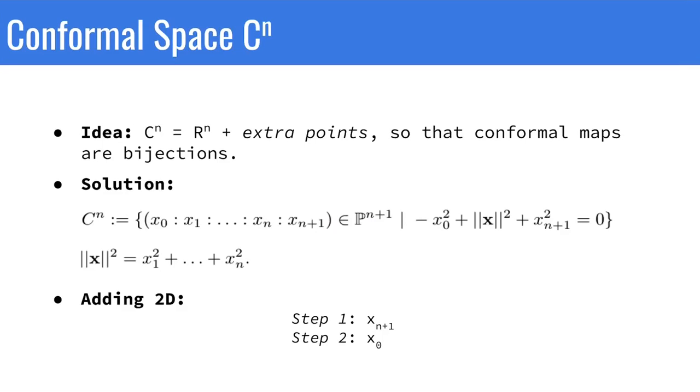The idea is that we're gonna add some extra points to R^n with the hope that conformal maps will become bijections of this extended space. The way to do this is not simple, as you can see. In particular, it requires the addition of two extra dimensions, x_0 and x_{n+1}.